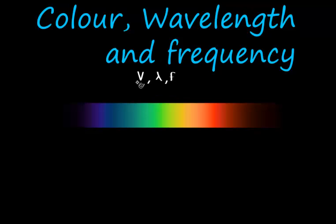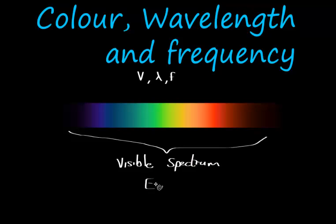And I also told you that light is actually just our perception of the electromagnetic spectrum. So this is the visible spectrum of the electromagnetic spectrum.